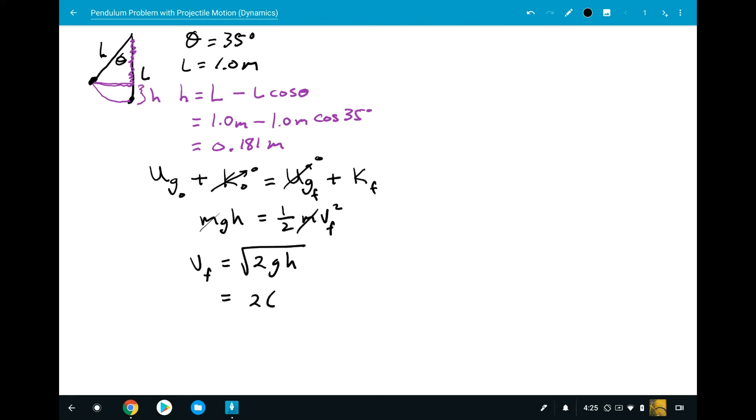So, that's going to be 2 times negative 9.80 meters per second squared for gravity, since it's downward negative. The height, I'm going to make it negative also because it's a downward fall. So, it's going to be negative 0.181 meters. Let's square root the whole thing, and what we're going to determine is that it's going to have a final velocity of 1.88 meters per second.